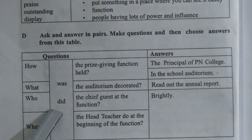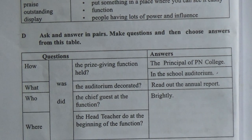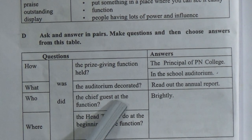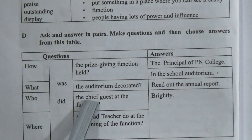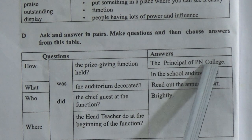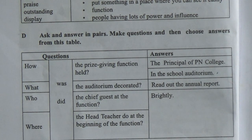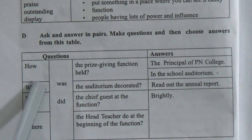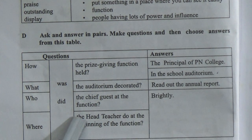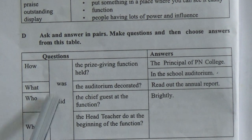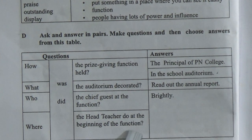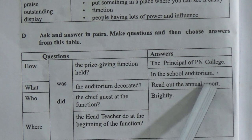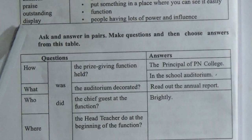Number three: Who was the chief guest at the function? You note that the answer is: the principal of PN College. Number four: What did the headmaster do at the function? The answer would be: He read out the annual report. That means, dear students, you will write the answers from here on your copy.